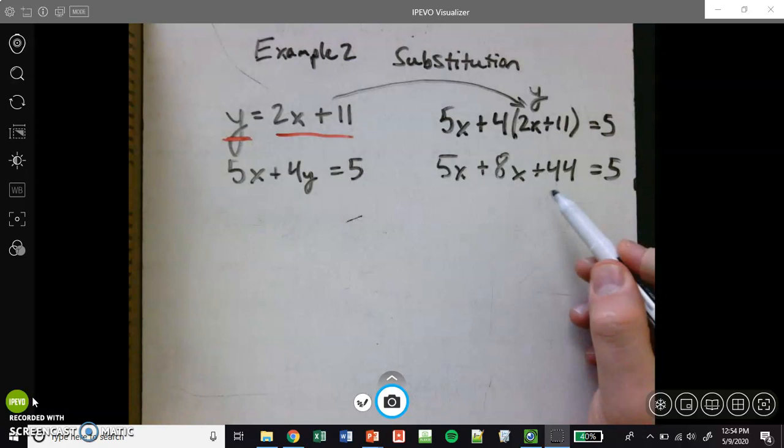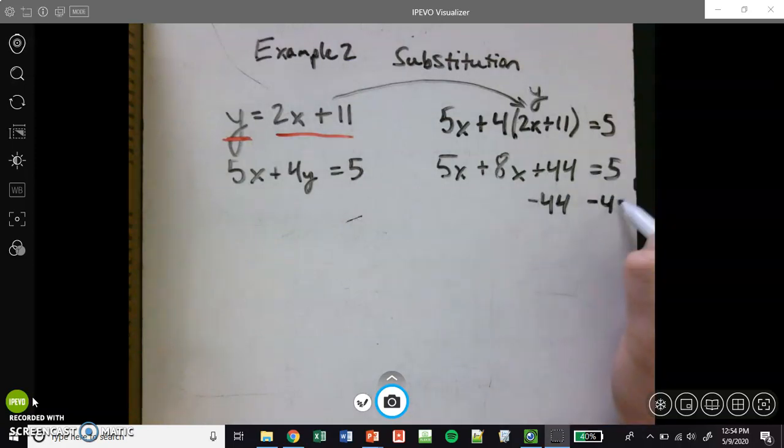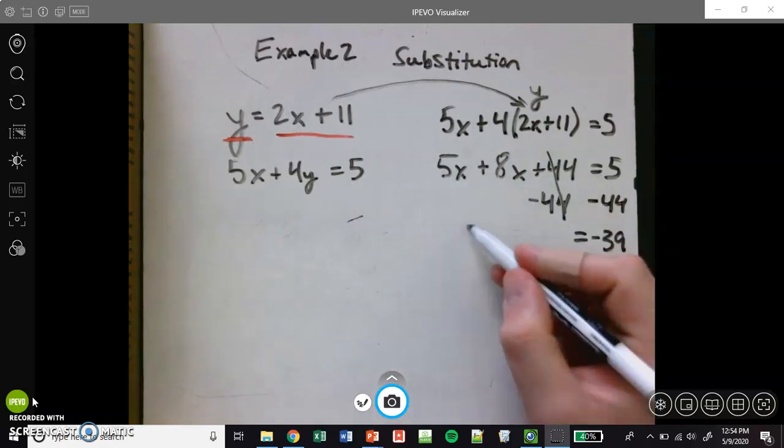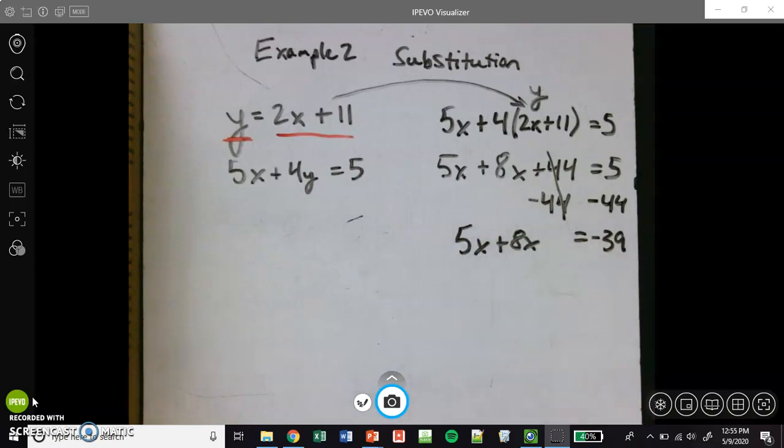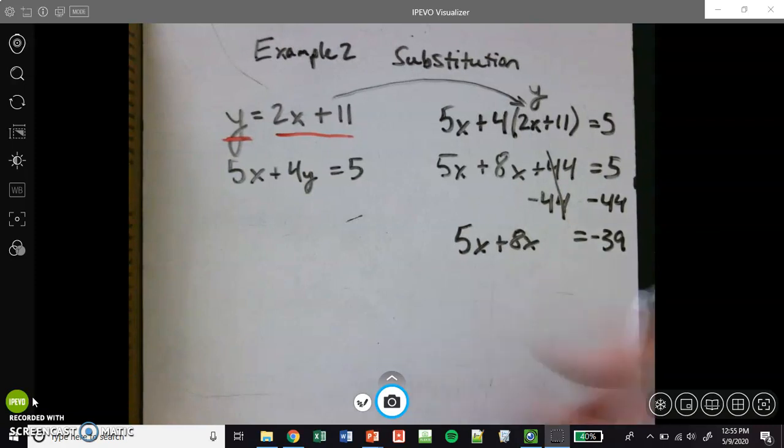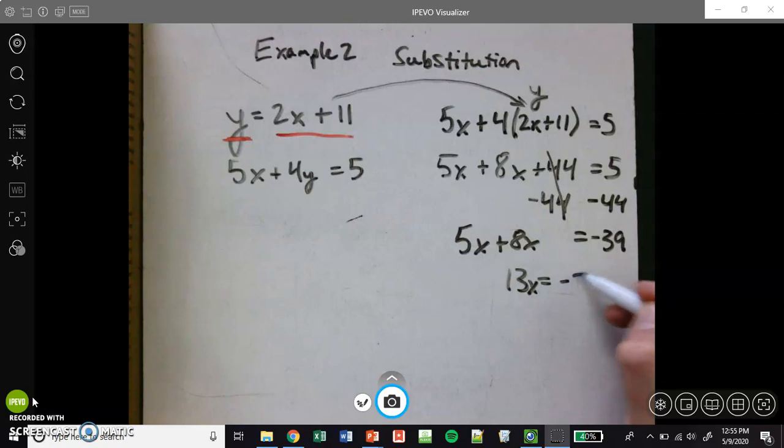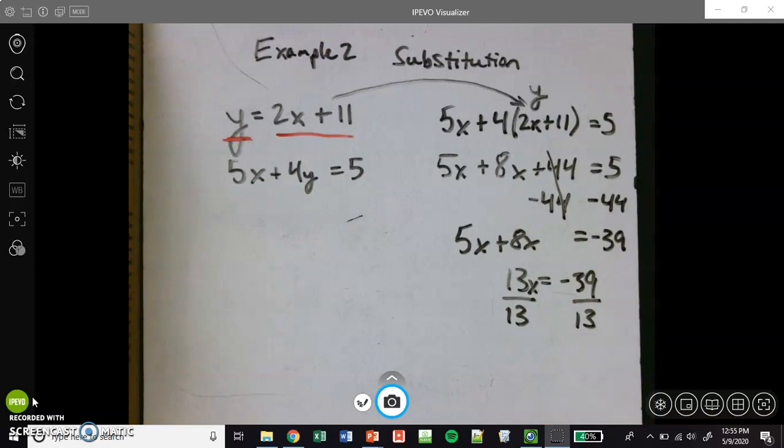I'm going to decide to subtract 44 from both sides. So that should be, I believe that's negative 39 on this side. And that cancels this, so I end up with just 5x plus 8x. That equals negative 39. Now, let's add those together. 5 plus 8, that's 13, equals, 13x equals negative 39. I divide both sides by 13, and I get, that should be x equals negative 3.